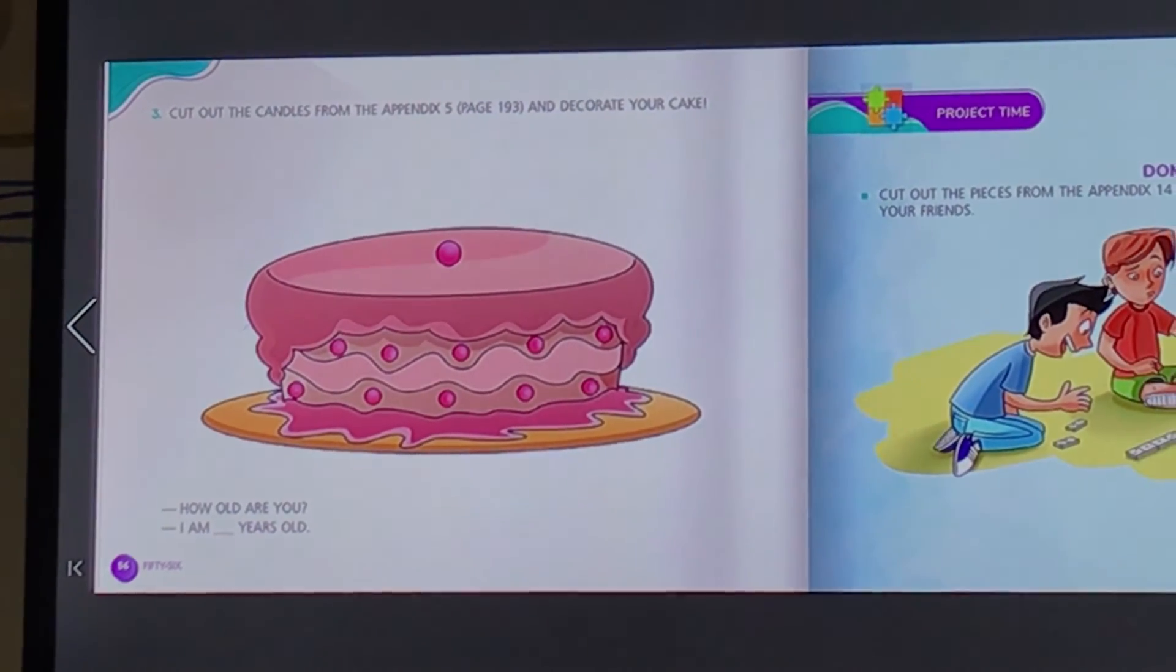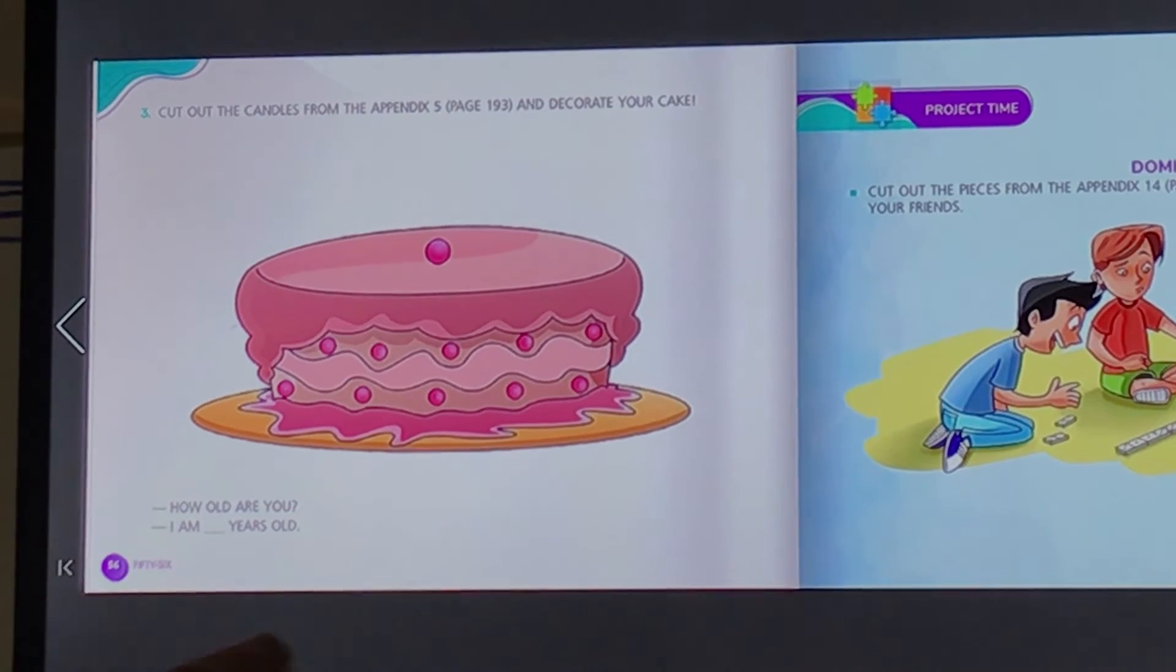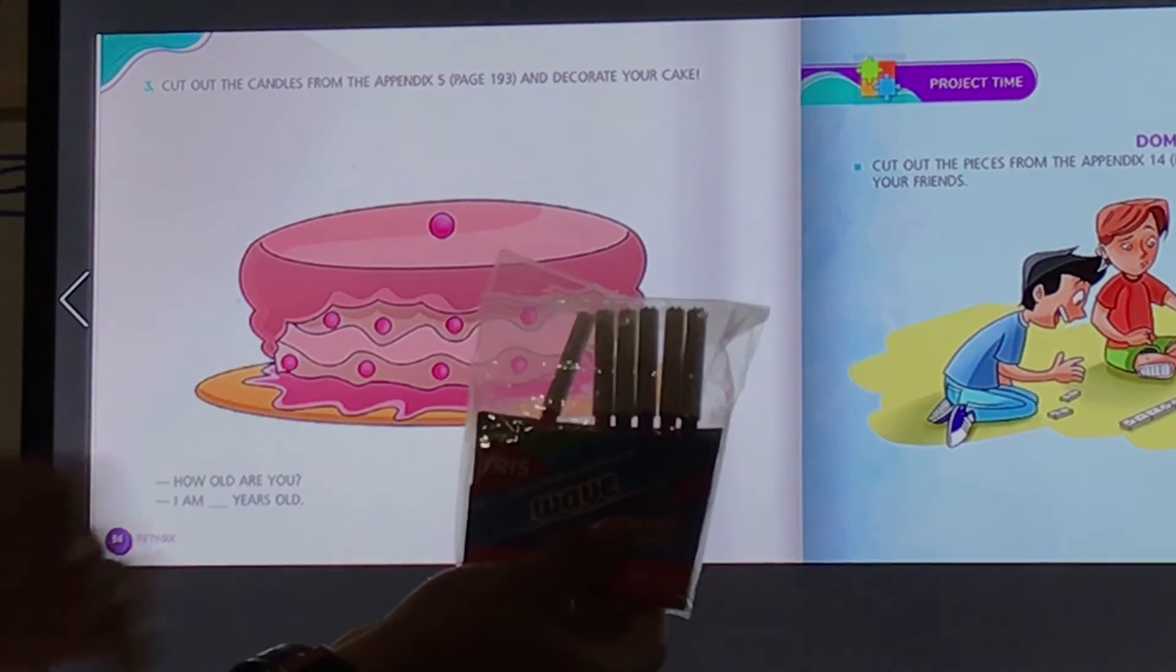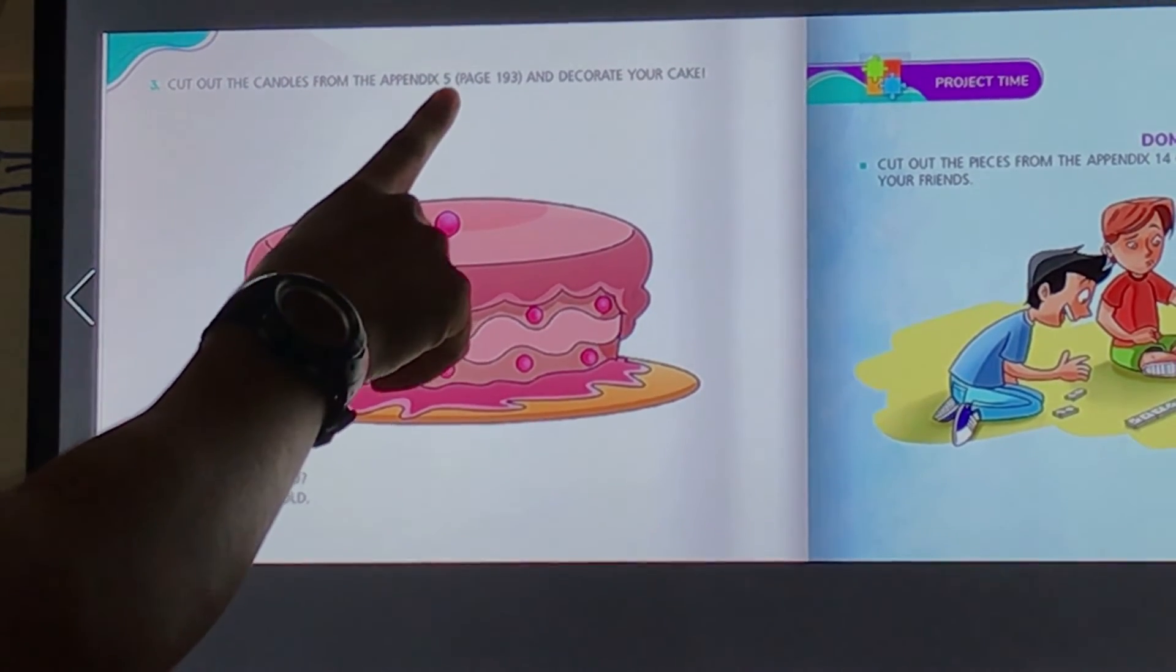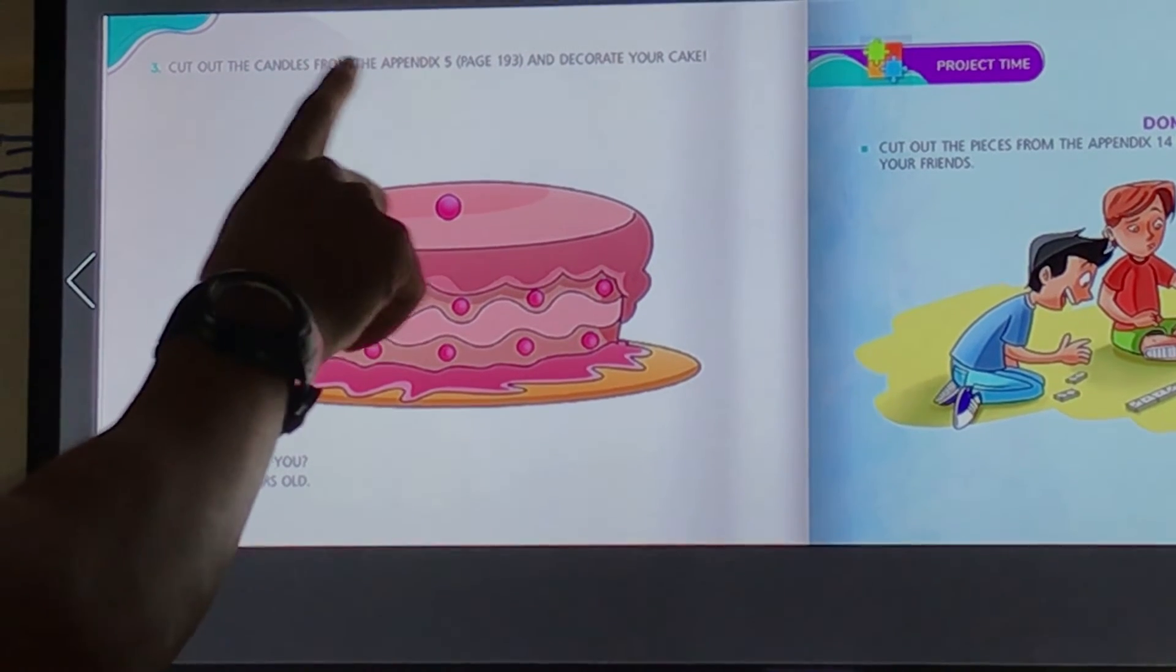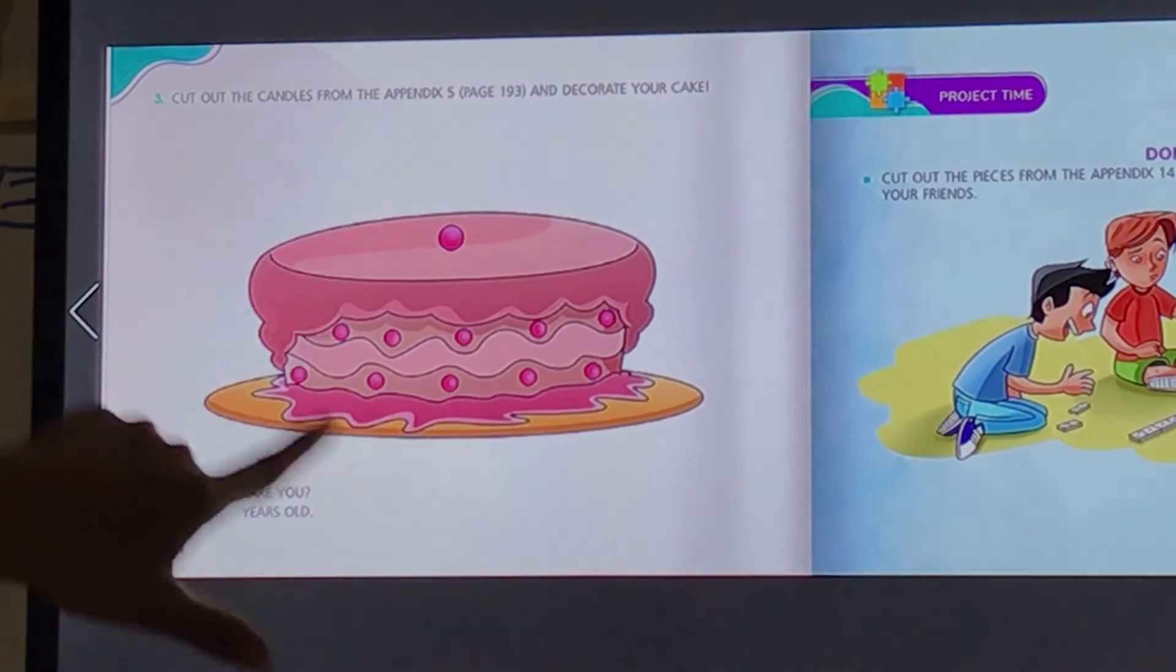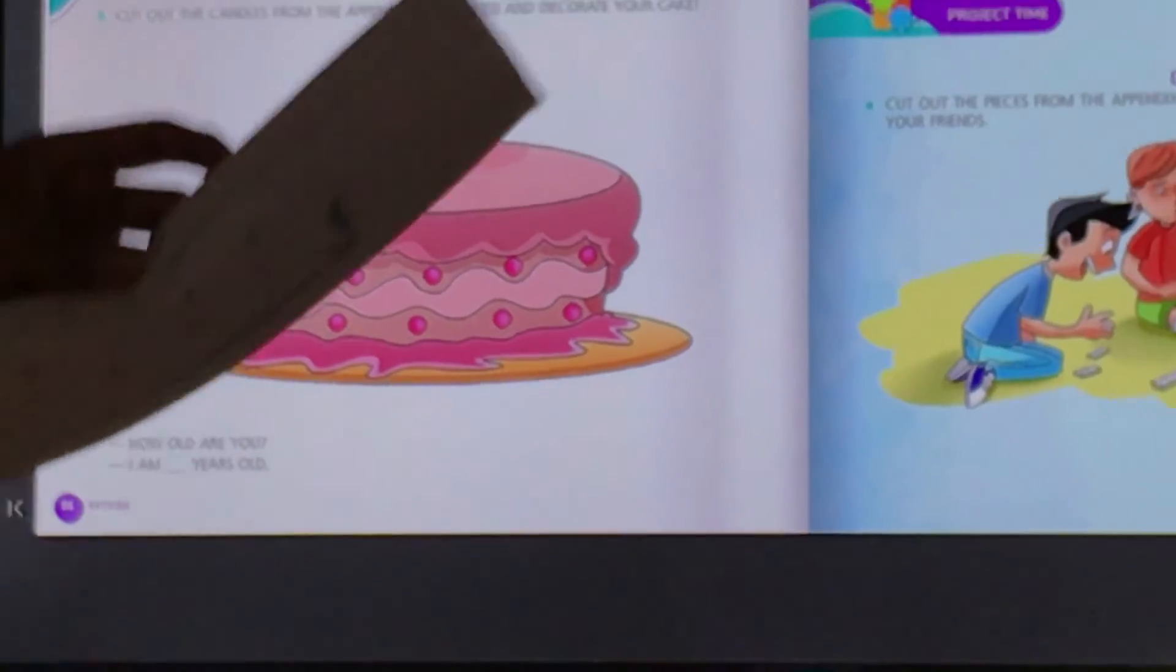Agora chegou uma atividade bem lúdica, bem divertida para a gente fazer. Para completar essa atividade você vai precisar de glue, scissors, and maybe your color pencils. Cut out the candles from the appendix five, page 193, and decorate your cake. Vamos decorar ele com candles. Estão no appendix, página 193. Tem várias candles. E aqui está o meu cake. Vamos decorá-lo. Vamos recortar, vamos lá no appendix e recortar as velhinhas.